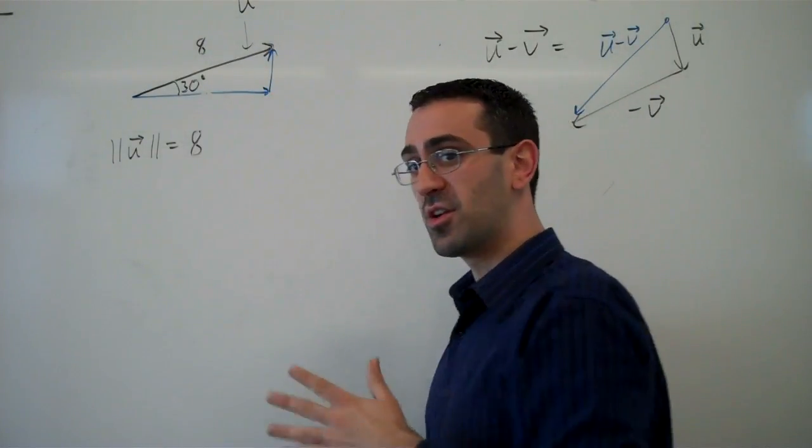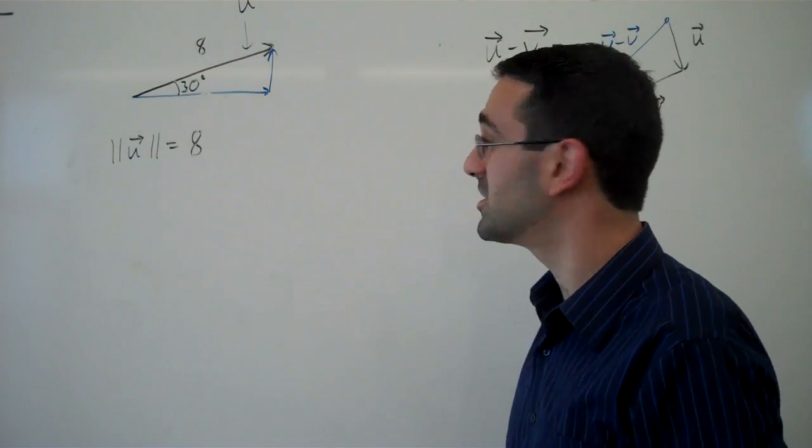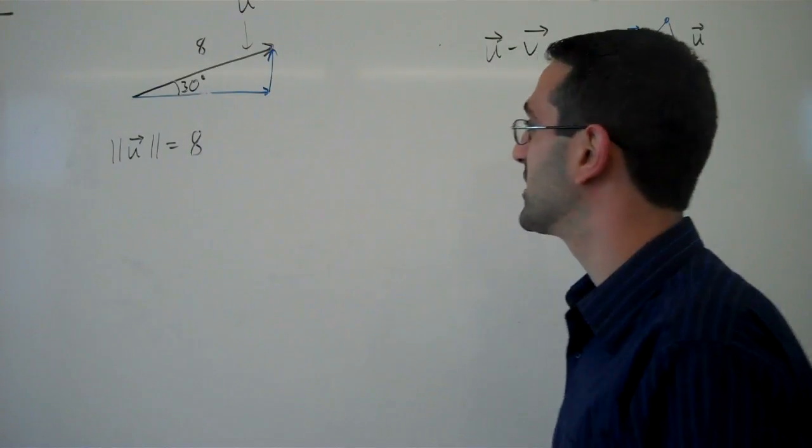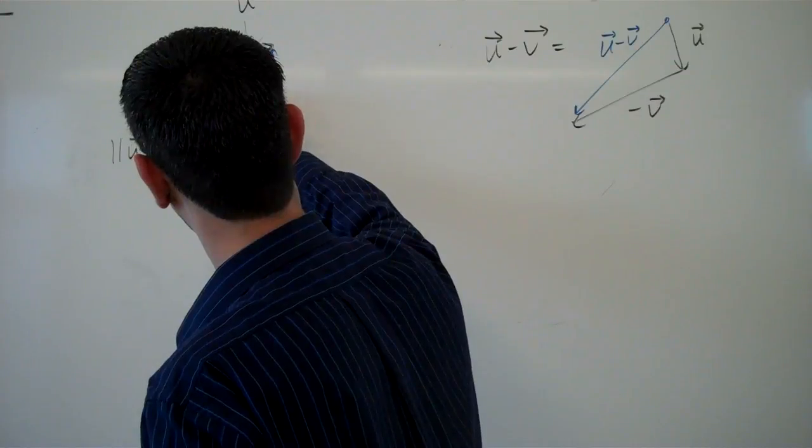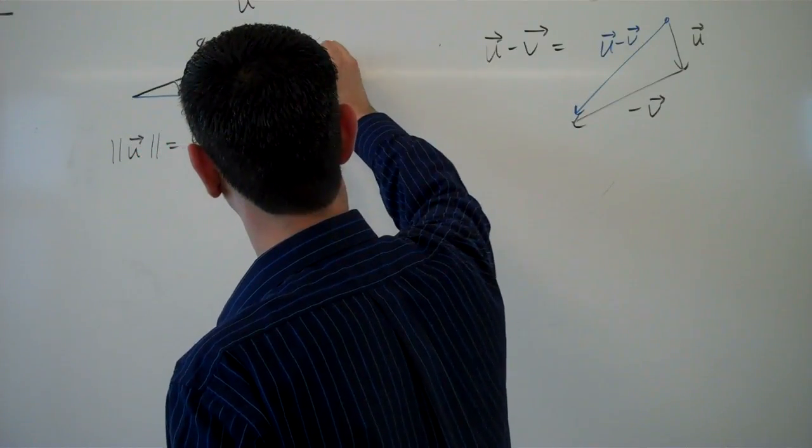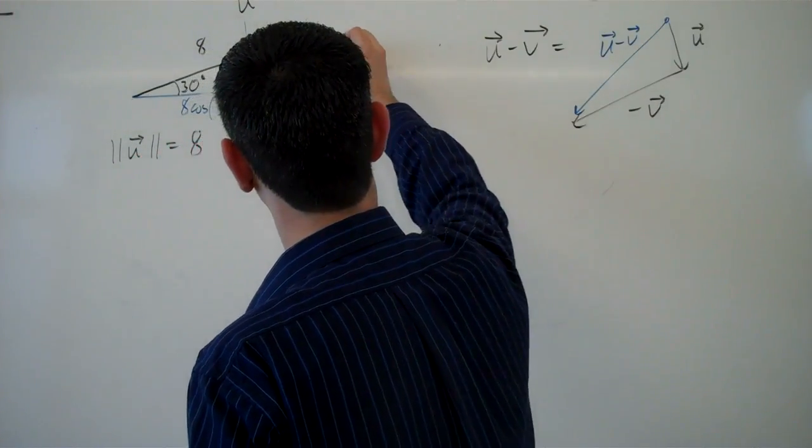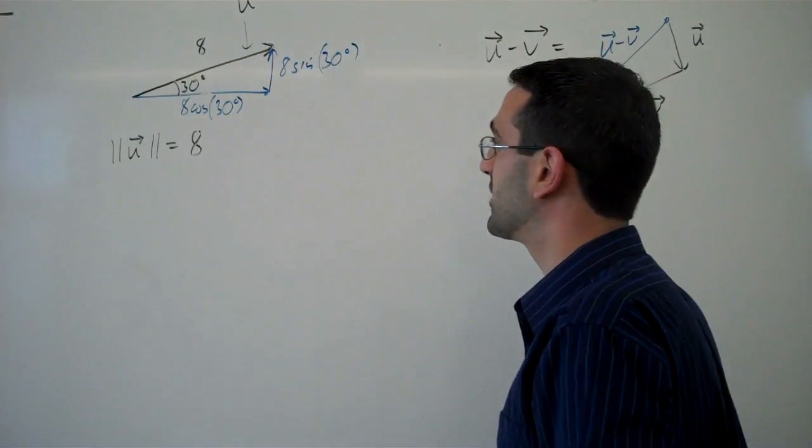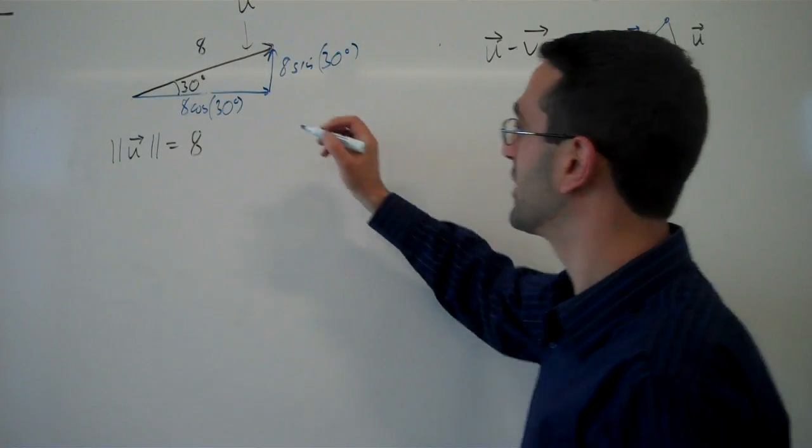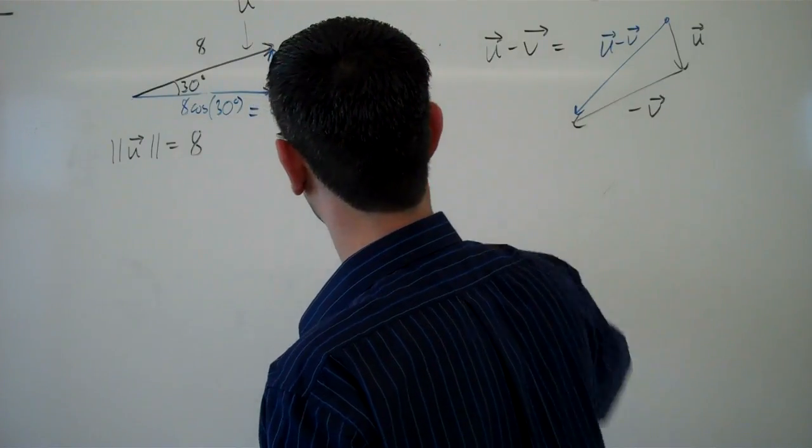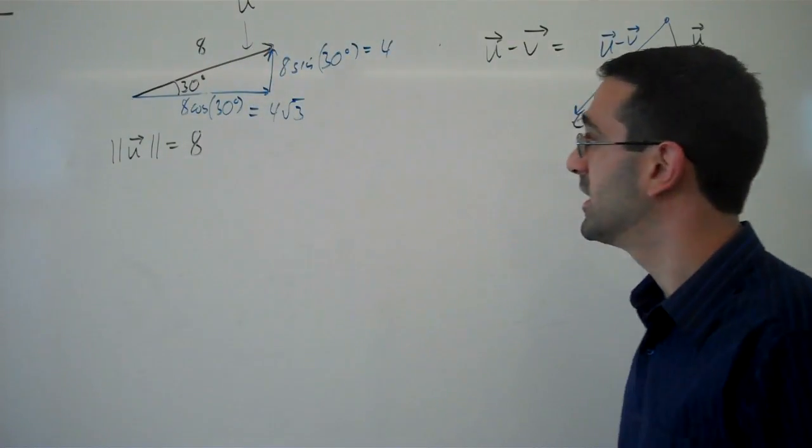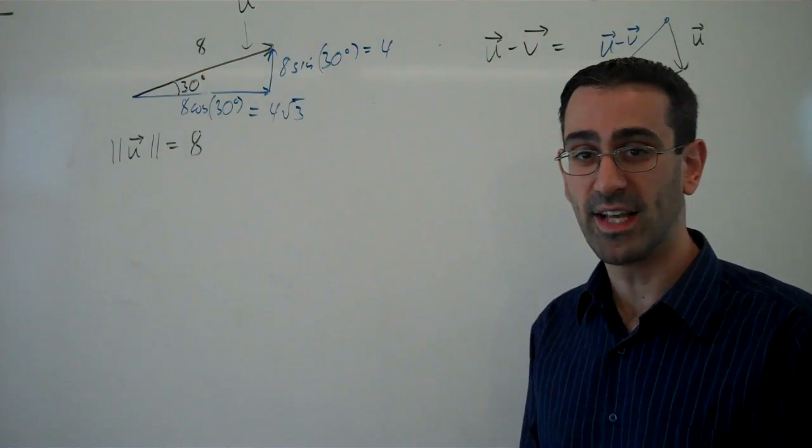Then we could find the components, the horizontal and vertical components here using trig. We can say this horizontal piece is going to be 8 cosine 30 degrees. This vertical part, 8 sine 30 degrees. And find that this horizontal part is going to be 4 root 3. This vertical part is going to be 4.